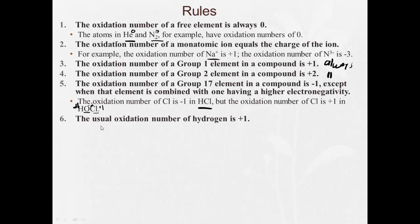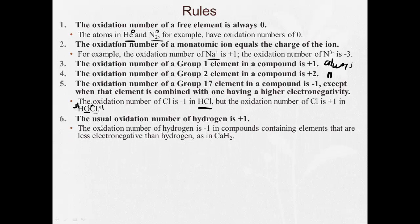The usual oxidation number of hydrogen is plus one. However, the oxidation number of hydrogen is minus one in compounds containing elements that are less electronegative than hydrogen, as in CaH2. So when hydrogen is bonded with a metal, the hydrogen will be negative one. When hydrogen is bonded with another non-metal, then it's going to be plus one. And we can look here usually, right? When hydrogen bonded with a non-metal like H2O, the hydrogen is first, showing that that's going to be positive. When it's bonded with a metal, the hydrogen is last. It's a hydride and that's going to be minus one.